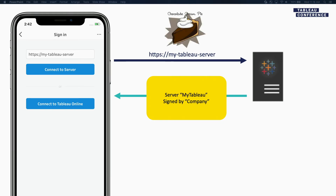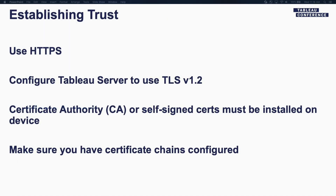Once the mobile app recognizes its certificate and says okay, I have this self-signed certificate and I recognize the server, then it's going to connect. Key things to remember: always use HTTPS, try to configure Tableau with TLS 1.2 — that's the latest and recommended from our Tableau administrators. Use a certificate signed by an authority, or you could also use self-signed certificates. Whatever you do, make sure you have the chains configured. The certificate chain adds an additional layer of security in the protocol, which helps the mobile app talk to Tableau server.